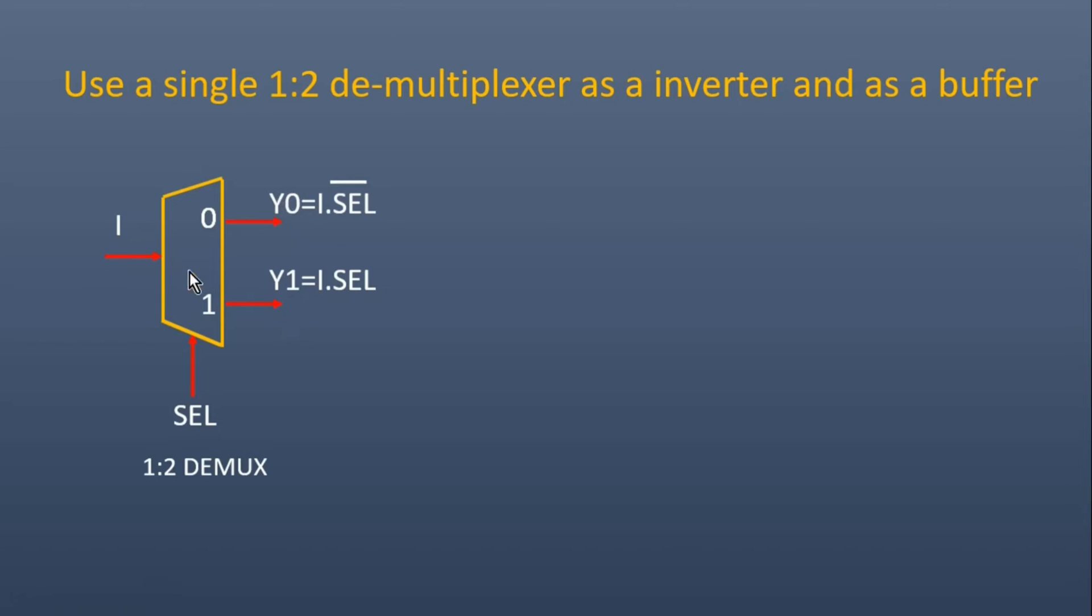Now from here we can easily find out how to convert a 1x2 demultiplexer into an inverter and a buffer. Let me tell you how.